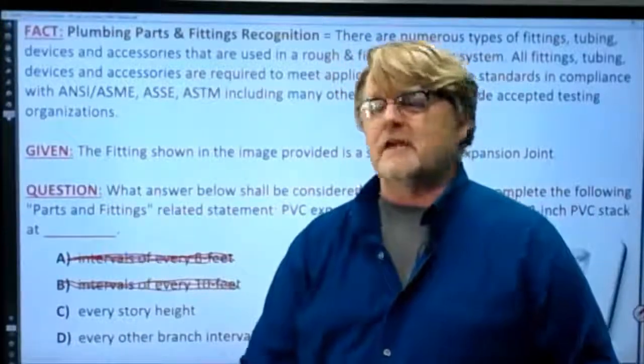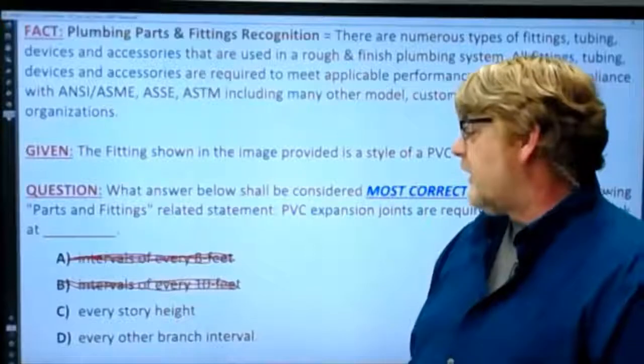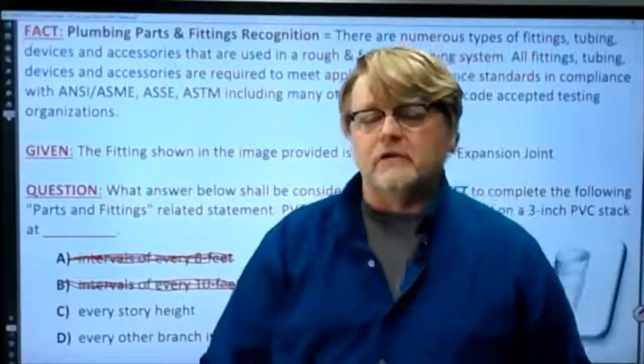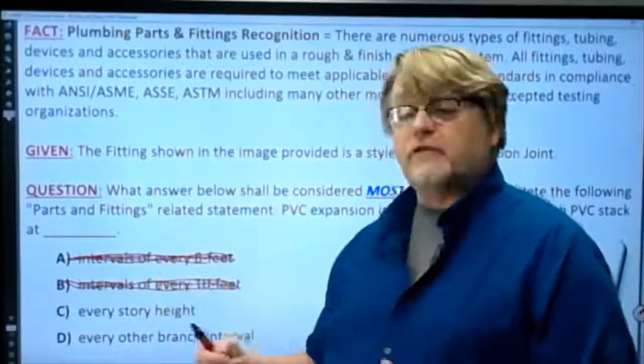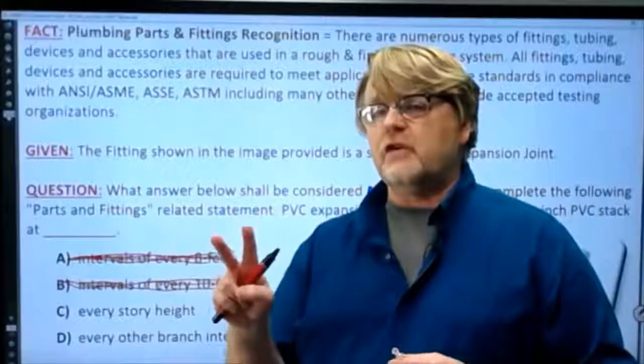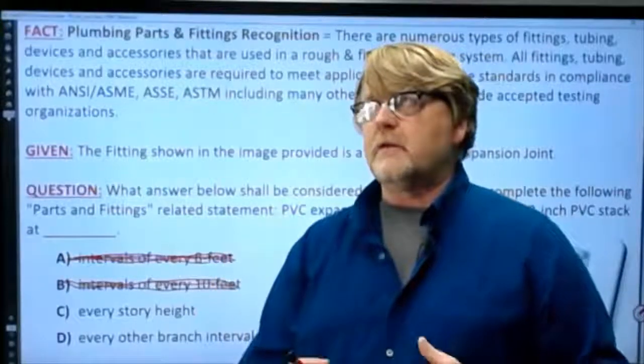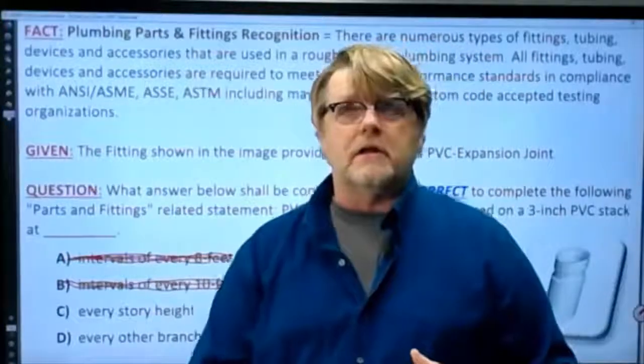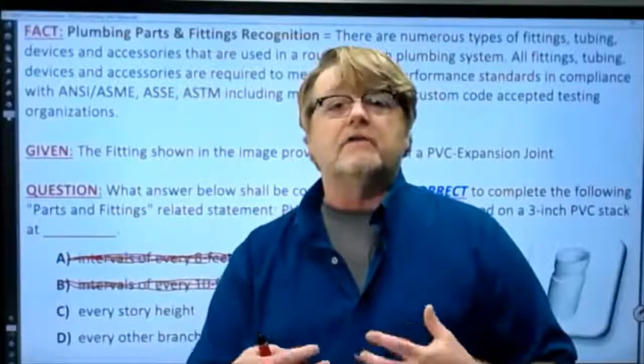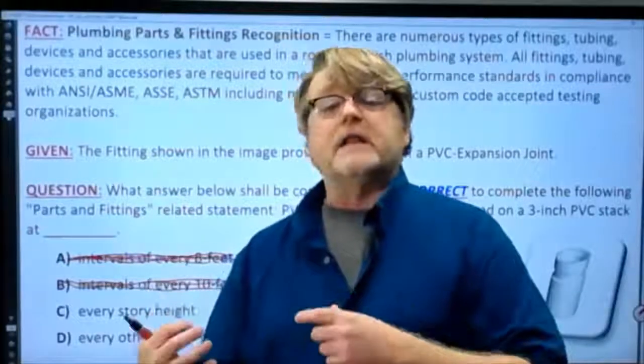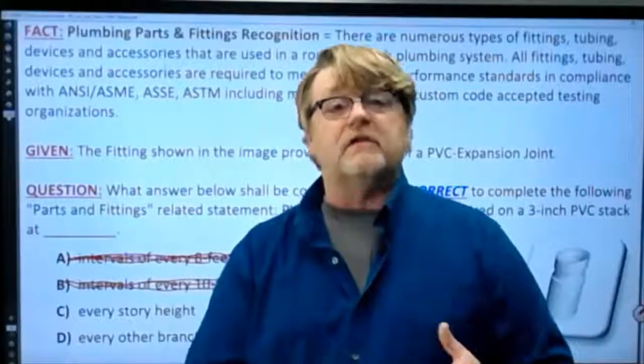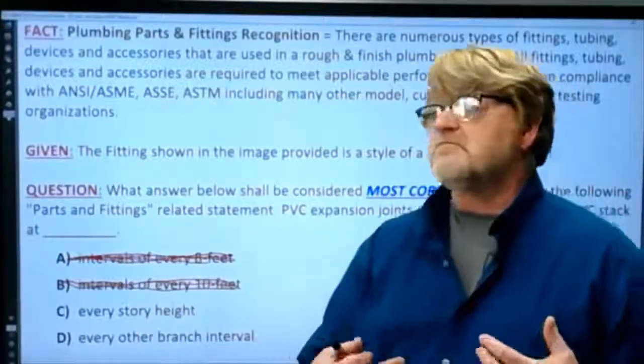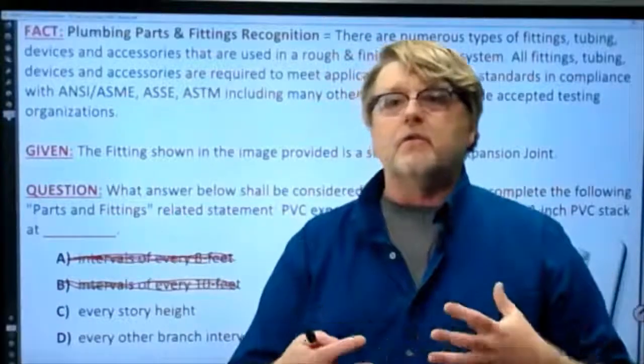Then we get at every story height, and then we get to every other branch interval. The two things going on here: there'll be the distractor, but there'll always also be two answers that are fairly close. This is where they're testing how well the knowledge that you have learned has transferred to you, how well has your coach, mentor, or teacher applied that information to you in an instructive classroom setting. Every story height is getting close to where you would need an expansion joint.